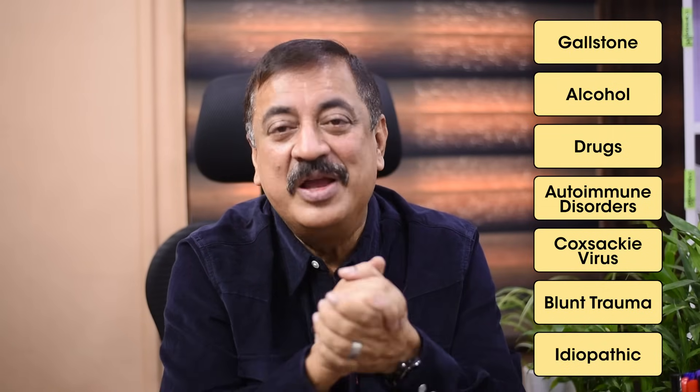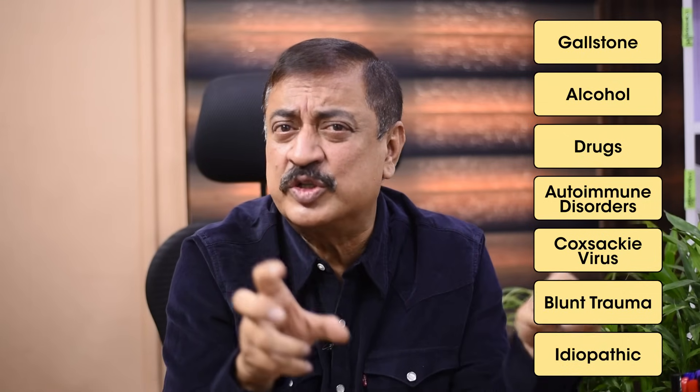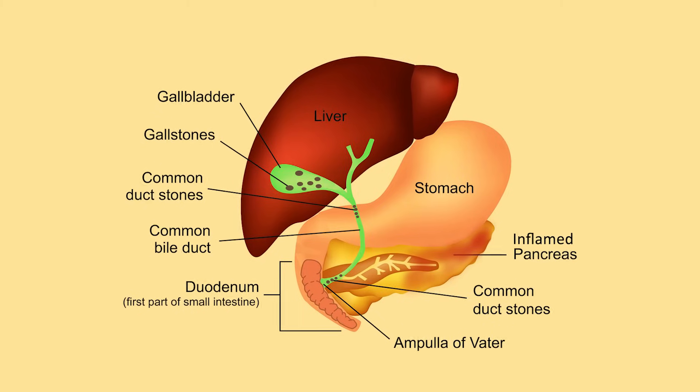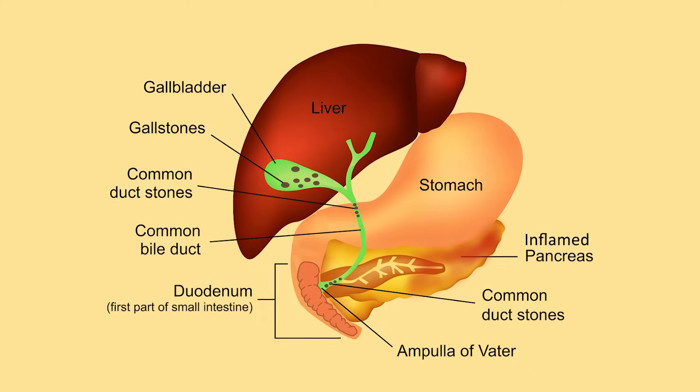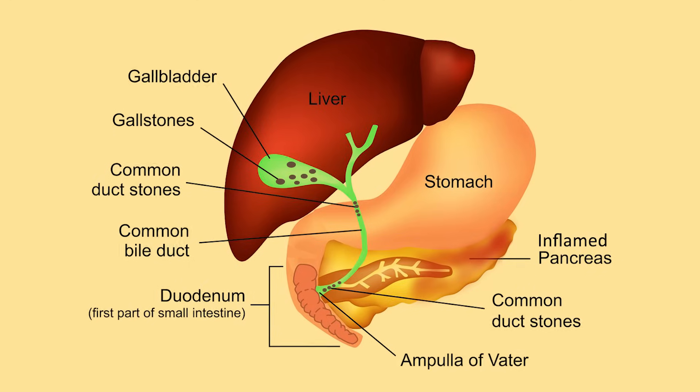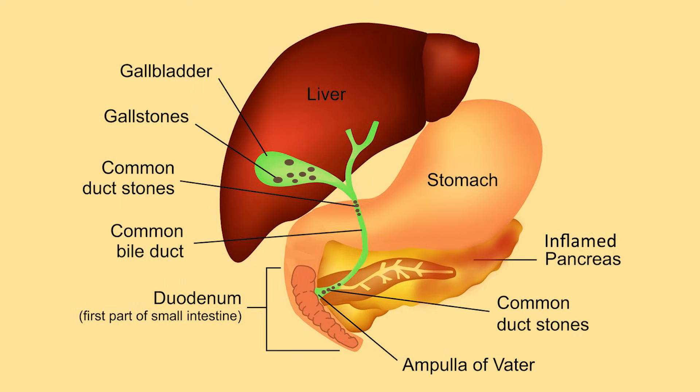Let's understand how gallstones can cause pancreatitis. If you look at the anatomy of the biliary and hepatopancreatic system: sludge or small stones from the gallbladder slip out, come through the bile duct, and get lodged near the opening of the ampulla of Vater or the hepatopancreatic duct. This causes inflammation, with the juice of the pancreas causing autodigestion of the pancreatic tissue. Because these enzymes are meant for digestion of meat and proteins — when they start doing autodigestion of the gland's own tissue, the pancreas gets inflamed and swollen.